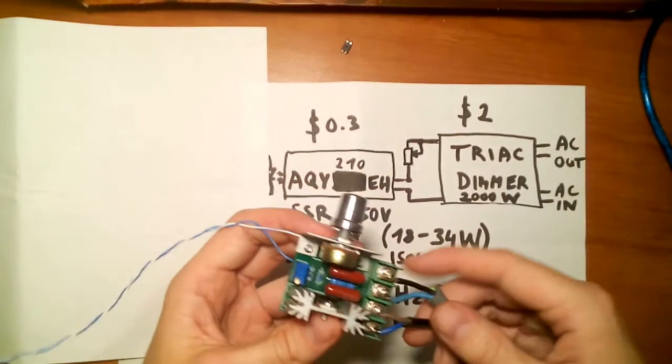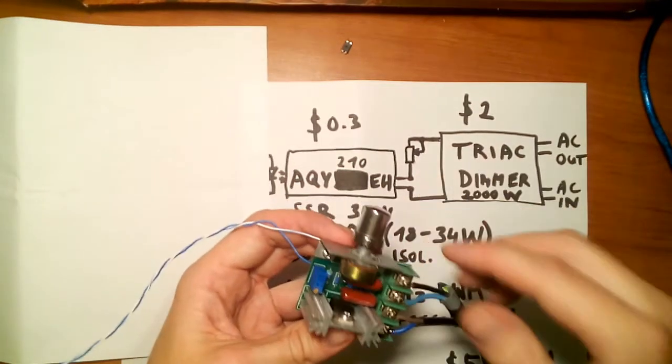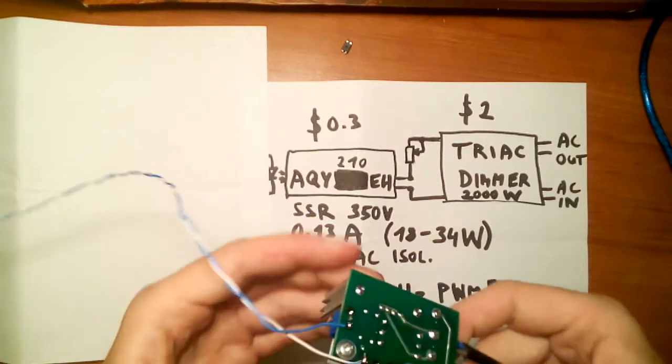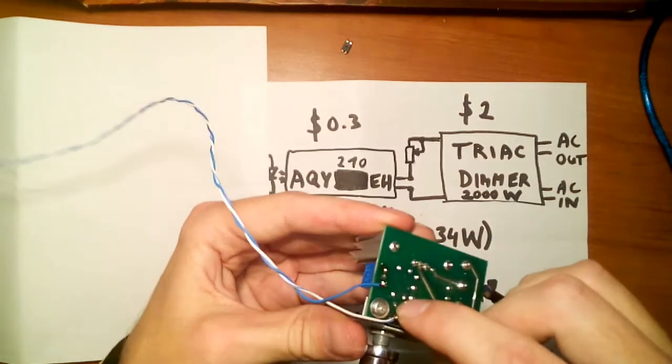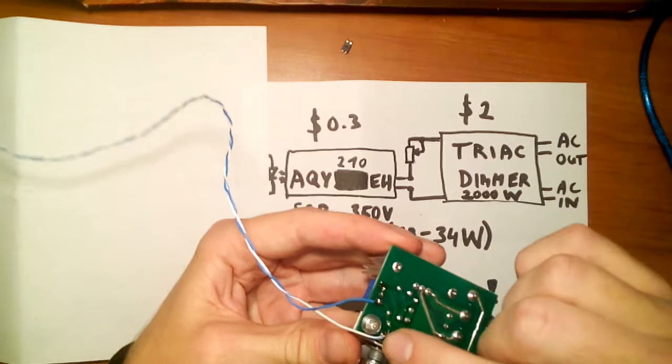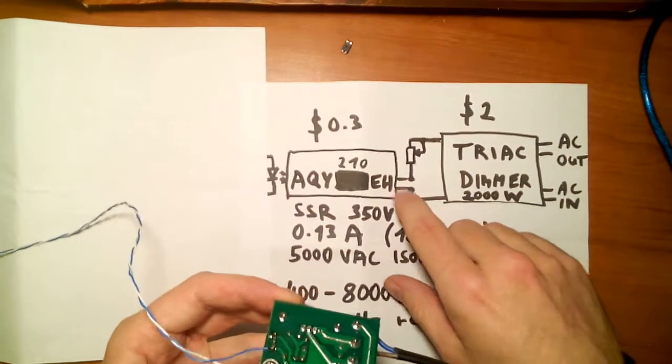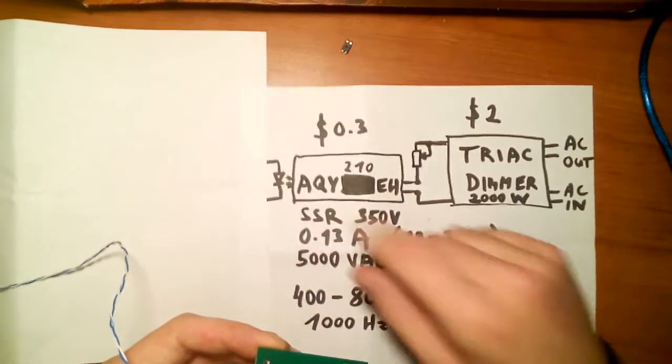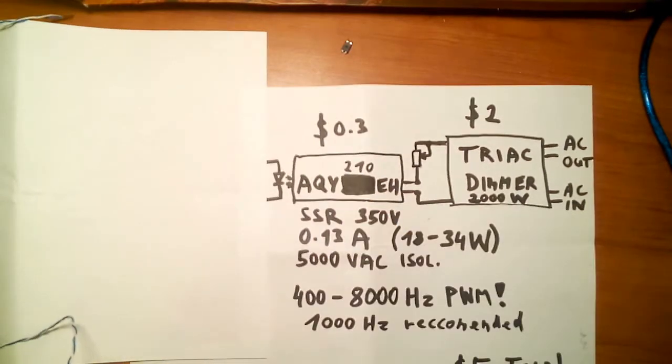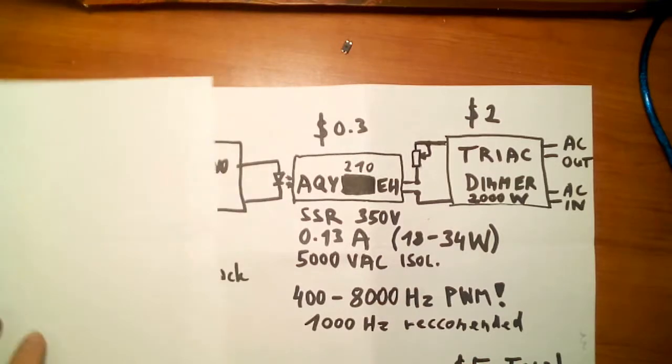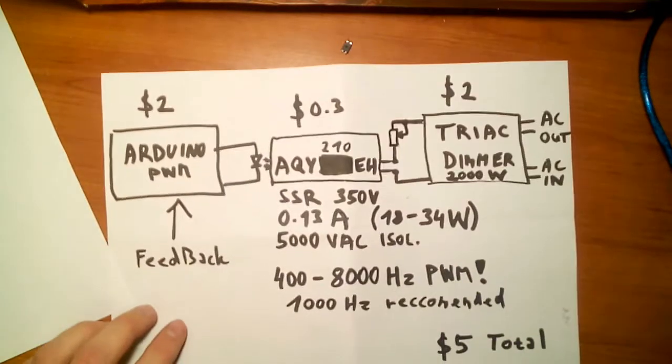And what I did is that I cut the trace that goes to this pot. It's right here. I cut it and I put two wires across it and connected it to this special optocoupler. And this is really nice because it allows me to control it with Arduino.